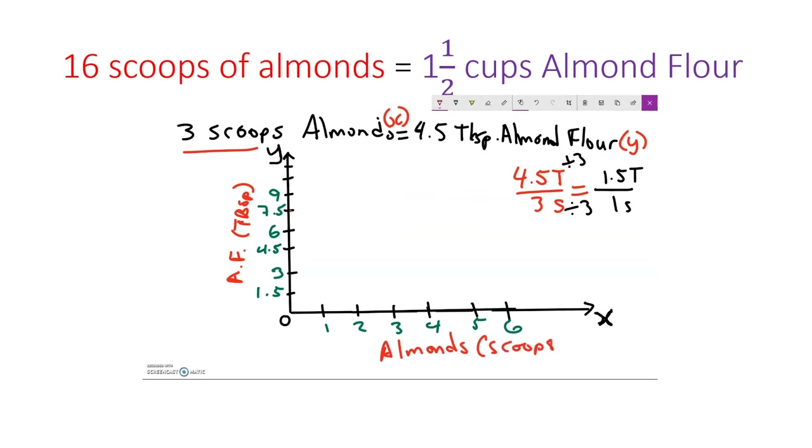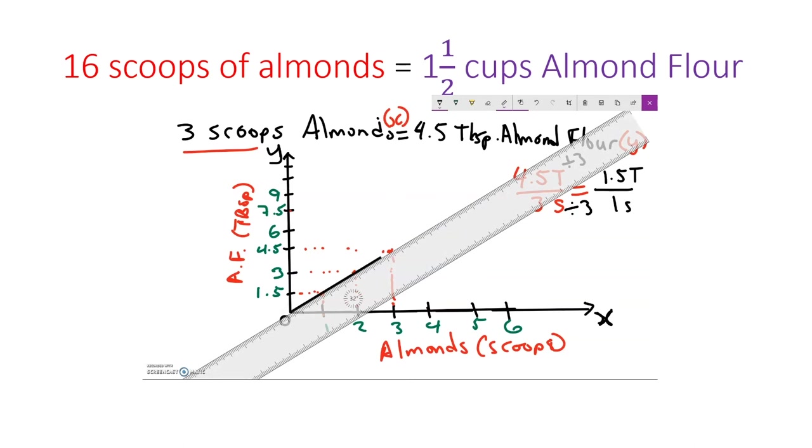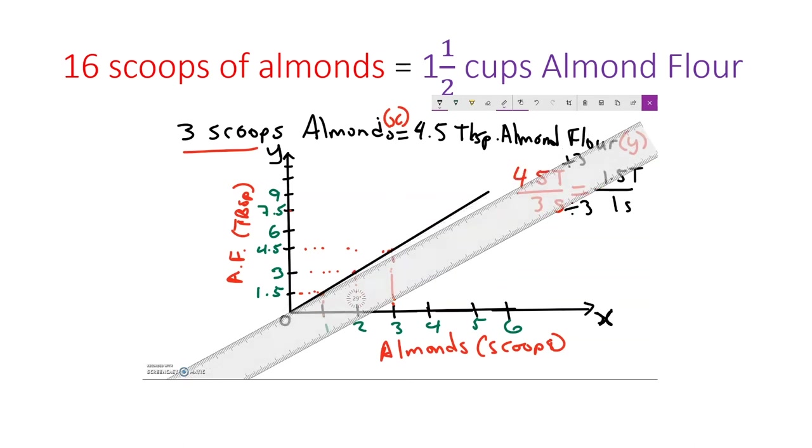And then for every scoop of almonds, I would get one and a half tablespoons of almond flour. So then here for two, I would get three tablespoons of flour. And then for three, I would get four and a half tablespoons of flour. And look what's going on here with my graph. If I were to graph these points, you notice that they are indeed a straight line going through the origin, which is what we would expect if they were proportional relationship. So there you have it.